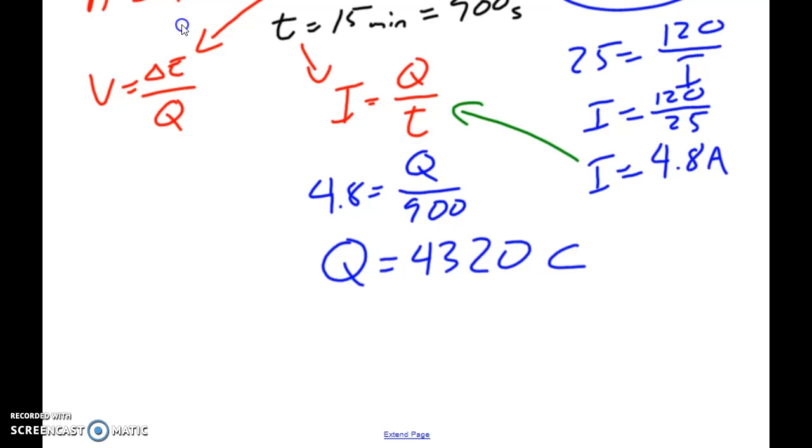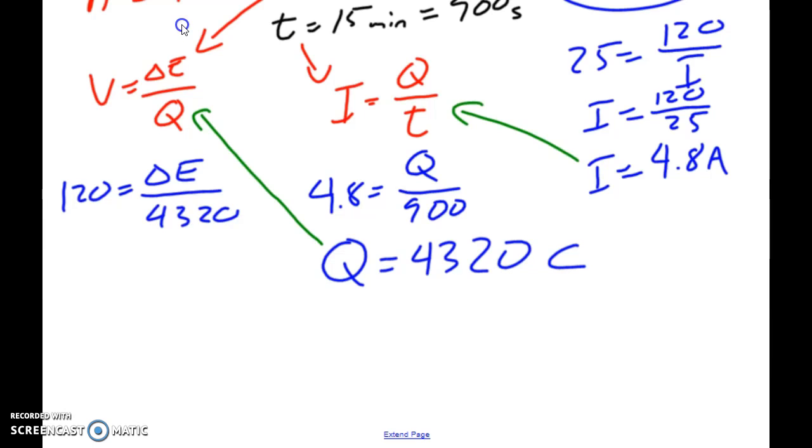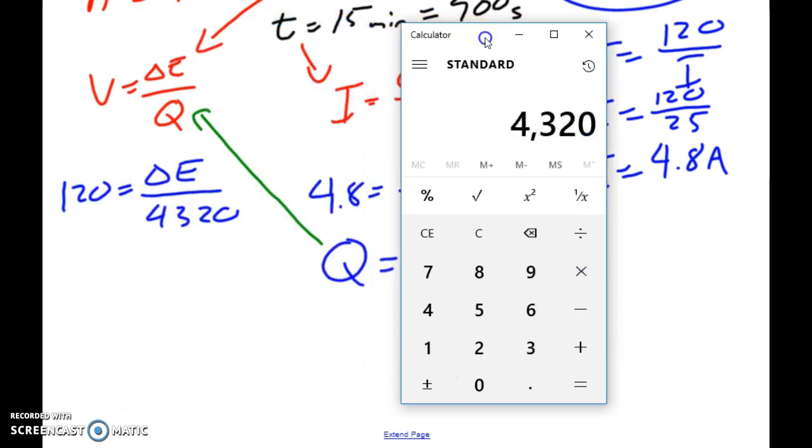So from here what we can do is we can take this and we can plug it into this equation. So we can plug in that we know that 120 is equal to delta E over 4,320. So if we take that number, multiply it by our voltage, we find out that our change in energy is equal to 518,400 joules.